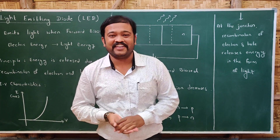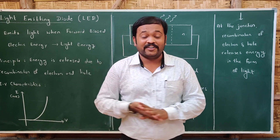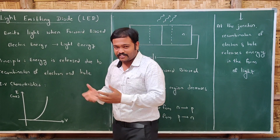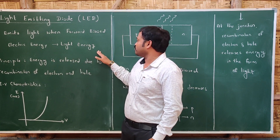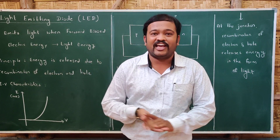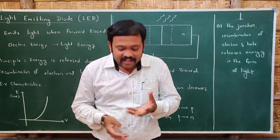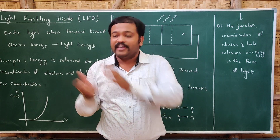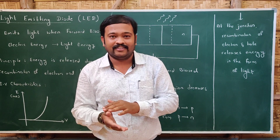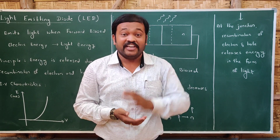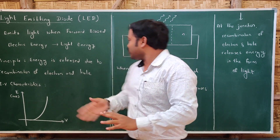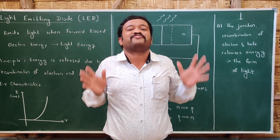The second device is the LED — Light Emitting Diode. The name says it emits light. The diode emits light when forward biased, making it the reverse of a photodiode — it converts electrical energy into light energy. It works on the principle that energy is released due to recombination of electrons and holes. When an electron jumps from valence band to conduction band it receives energy, and when it comes back down it emits energy in the form of light — this is called light emission.